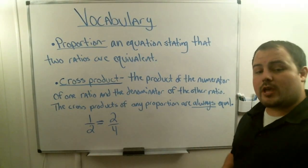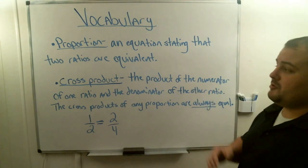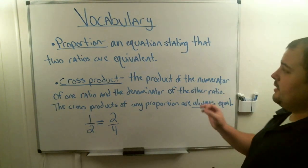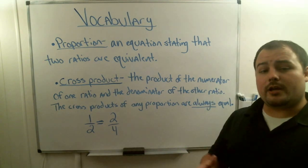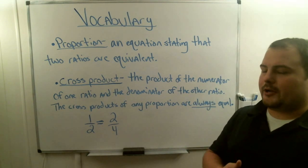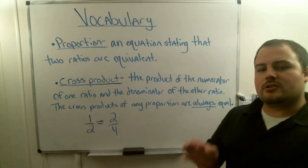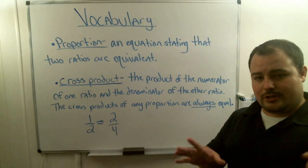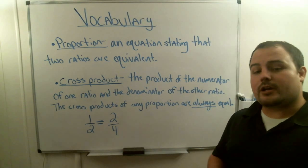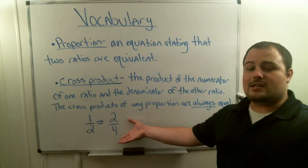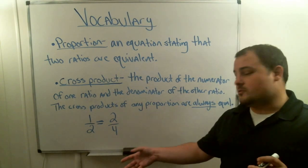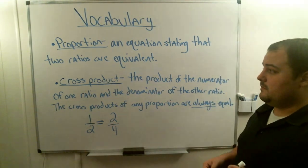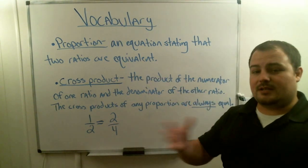In our vocab, we have two vocab words for today. The first word being proportion. A proportion is an equation that states that two ratios are equivalent. The word ratio means fraction. So a proportion really is an equation — an equal sign — that states that two fractions are equal to each other. This is a proportion because we're stating that this first fraction is equal to the other fraction. The word equivalent means equal.